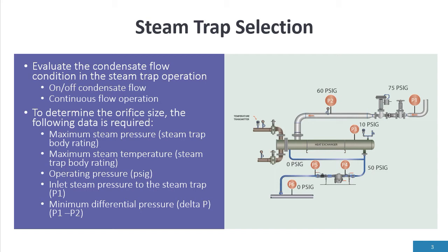The body rating has to be rated for 150 psi at 366 degrees because we're underneath the code, the power piping code or depending on what country, there are codes that govern steam and condensate piping. The operating pressure, an example would be 75 psi.